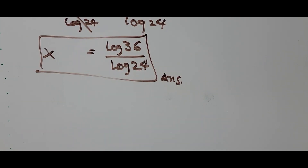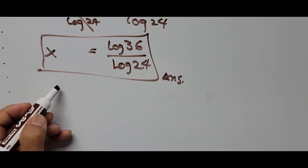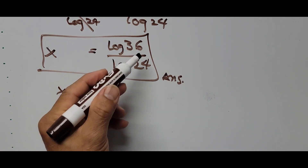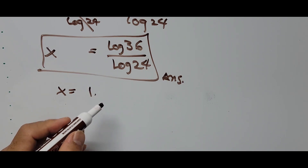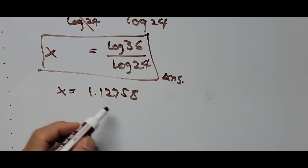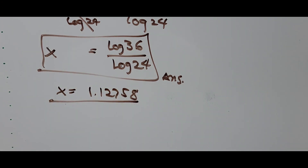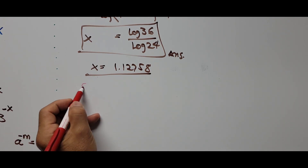Using a calculator to get the decimal value: x equals log of 36 divided by log of 24, which is approximately 1.12758. To verify our answer is correct, we substitute the value of x back into the original equation.